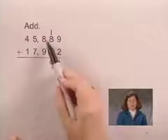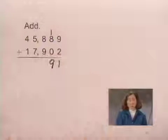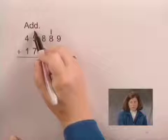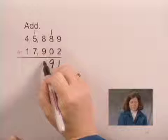To add the hundreds, we add 8 plus 9, which is 17 hundreds. 17 hundreds is 1,000 and 7 hundreds.